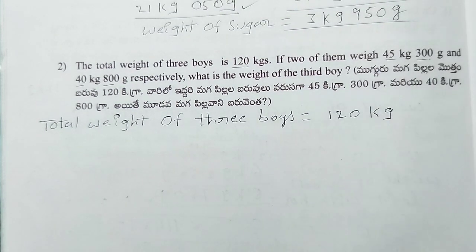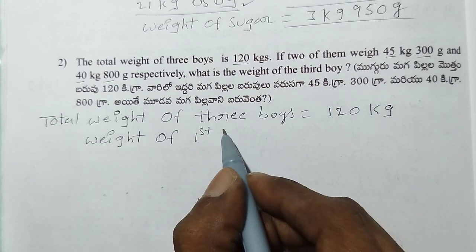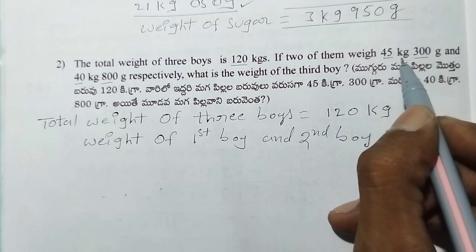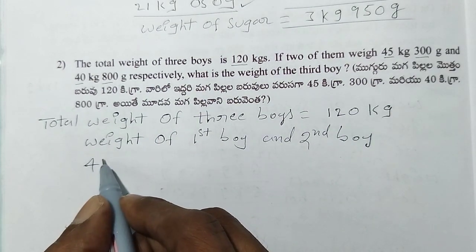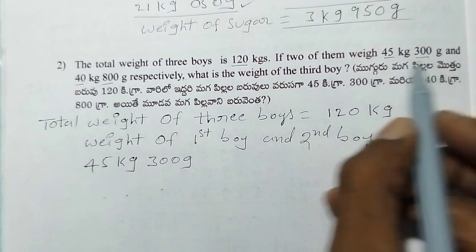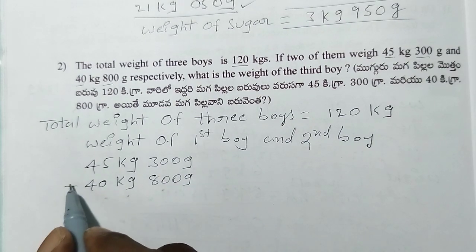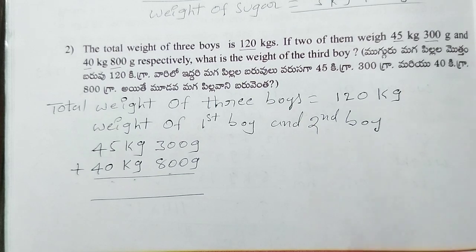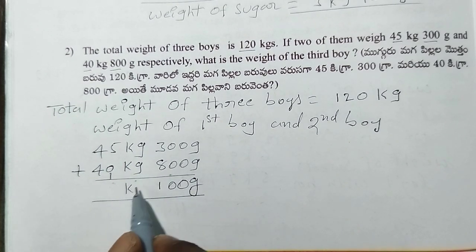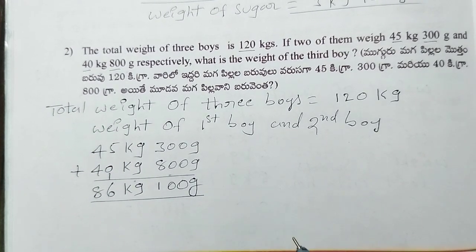We add the weights of the first and second boys. First boy: 45 kg 300 grams. Second boy: 40 kg 800 grams. Adding: 0 plus 0 is 0, 0 plus 0 is 0, 8 plus 3 is 11 — write 1 carry 1. 5 plus 1 plus 1 is 6, 4 plus 4 is 8. So the combined weight is 86 kg 100 grams.